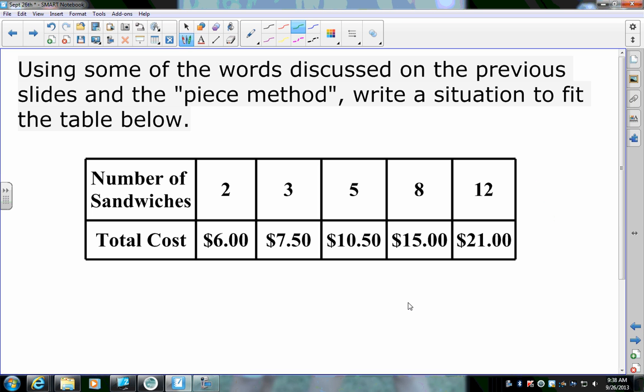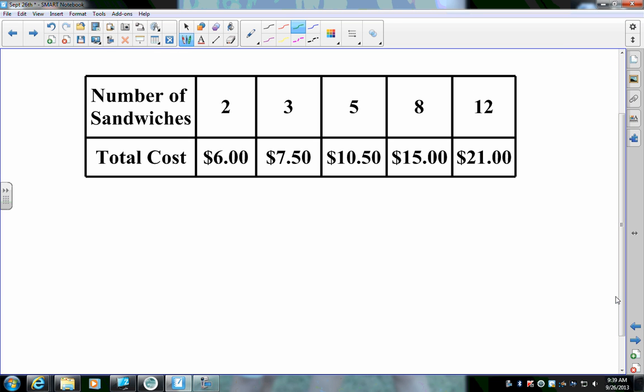Let's look at another one. Now, it says, using some words discussed in the previous slides and the piece method, write a situation to fit the table below. Now, before we can write our situation, we need to be able to know the rate of change and the initial amount, okay, or the constant. Now, a lot of times, I don't like looking at my tables when they are written horizontally. So, I'll go and change it to vertical. Again, it depends on how much room you have on your paper. I'm going to put x, then y, or I could actually, I may just put sandwiches and total cost.